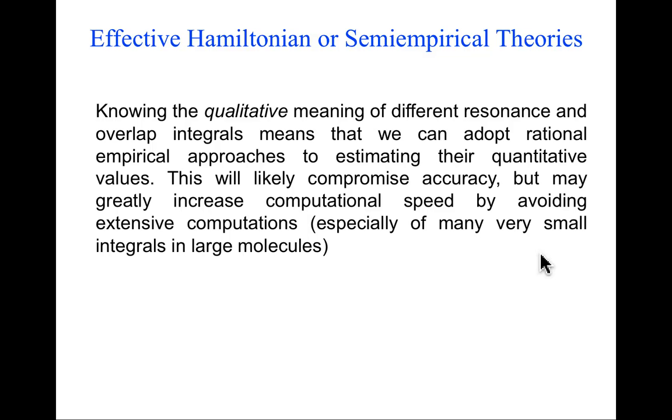Now let's talk about effective Hamiltonian or semi-empirical theories—instances where we're not trying to solve from first principles. We now understand qualitatively what resonance and overlap integrals tell us: diagonal resonance integrals give energies of specific functions, off-diagonal ones give coupling between functions, and overlap integrals give closeness of functions. I may have a way to empirically estimate quantitative values without computing them from first principles. I'm likely to lose some accuracy, but I might get very speedy with some rules for filling in numbers.